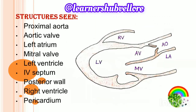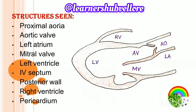The structures seen in the parasternal long axis view are: proximal aorta, aortic valve, left atrium, mitral valve, left ventricle, interventricular septum, posterior wall, right ventricle, and pericardium. Note that the right atrium is not seen in this view.